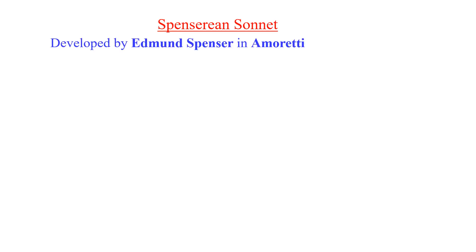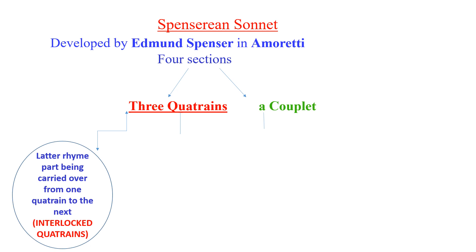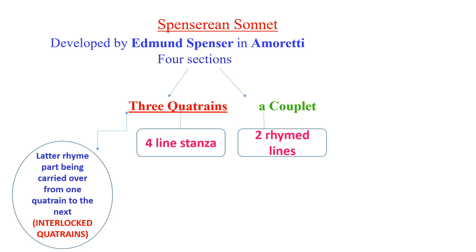The Spenserian sonnet was developed by Edmund Spenser in his collection Amoretti. Like the Shakespearean sonnet, it has four sections: three quatrains and a couplet. However, the quatrains are interlocked or linked quatrains.